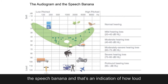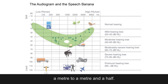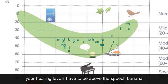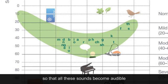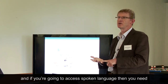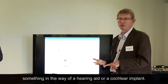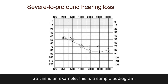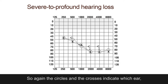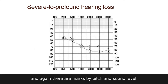So in the centre of the graph is what we call the speech banana, and that's an indication of how loud spoken communication is at a distance of about a metre to a metre and a half. It just shows the intensity of speech sounds. So if you're wanting to develop spoken language, your hearing levels have to be above the speech banana so that all these sounds become audible. The circles and crosses indicate which ear — the circles for the right ear, the crosses for the left — and there are marks by pitch and sound level.